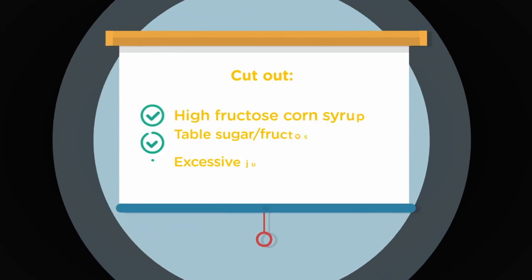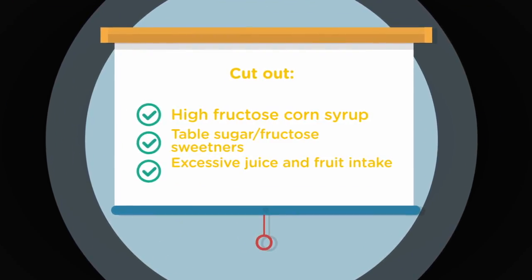Some things you can cut out from your diet are high fructose corn syrup, table sugar, fructose sweeteners, and excessive fruit and juice intake. Tip number two: cut out trans fats and hydrogenated oils.